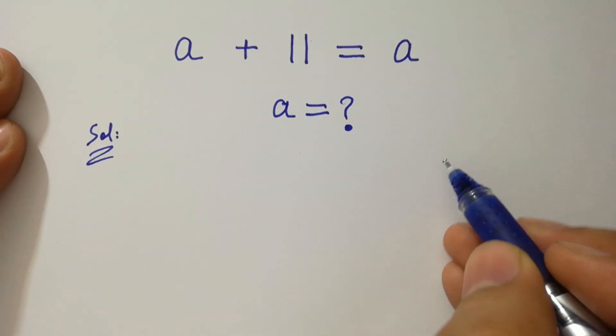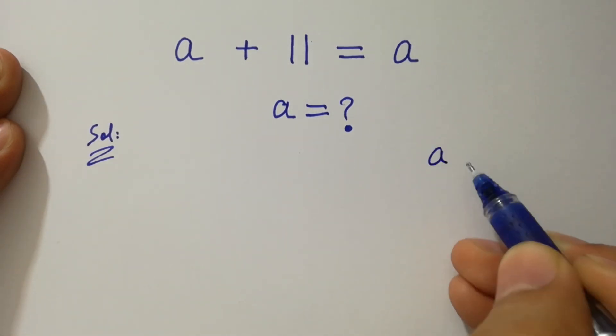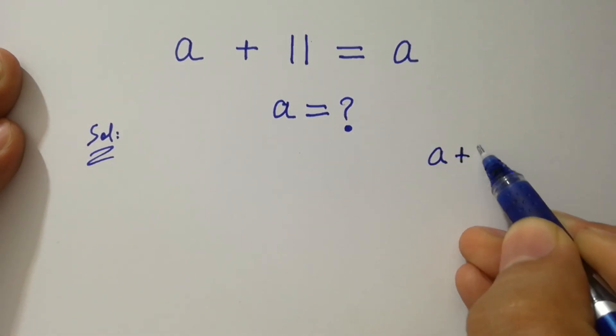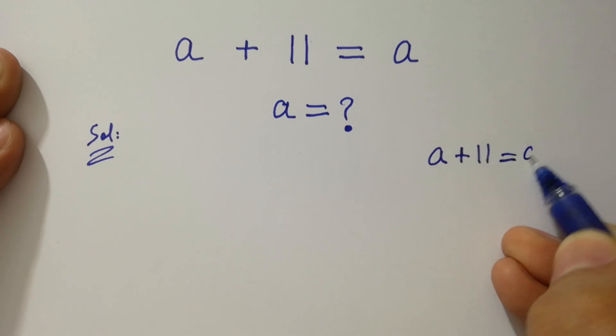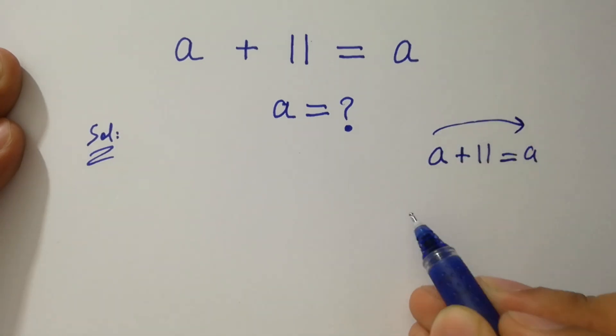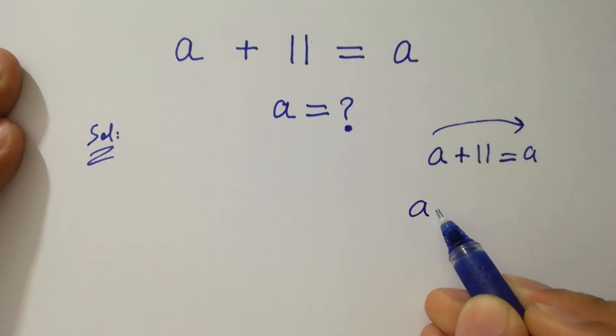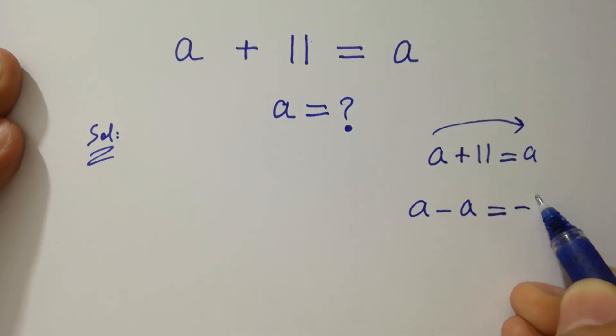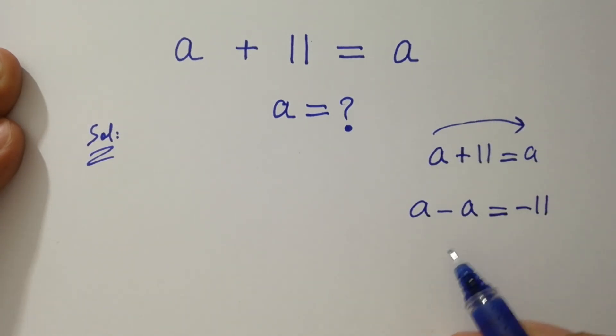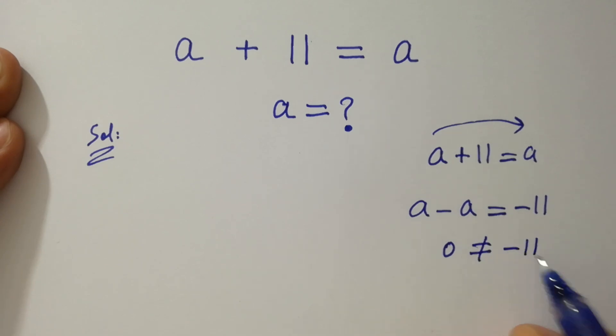If you see a plus 11 equal to a, then a minus a will be equal to minus 11. a minus a is 0, which does not equal to minus 11.